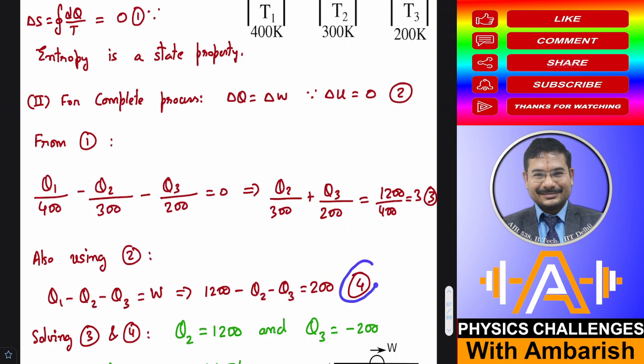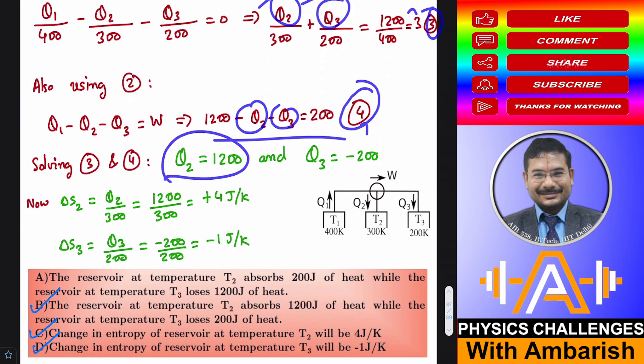And now you see equation number 4 and equation 3. The only unknowns are Q2 and Q3. If you solve them, you get Q2 as 1200 joule and Q3 as minus 200 joule.